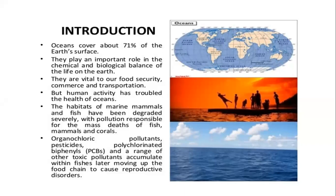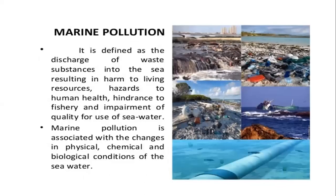The oceans cover about 71% of the earth's surface. They play an important role in the chemical and biological balance of life on earth, and are vital to food security, commerce, and transportation. But human activity has troubled the health of oceans. The habitats of marine mammals and fish have been degraded severely, and pollution is responsible for mass deaths of fish, mammals, and corals. Organochlorine pollutants, pesticides, polychlorinated biphenyls, and other toxic pollutants accumulate within fish and move up the food chain, causing reproductive disorders. Marine pollution is defined as the discharge of waste substances into the sea resulting in harm to living resources, hazardous to human health, hindrance to fishery, and impairment of the quality of sea water.